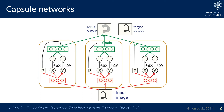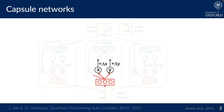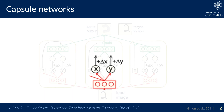One architecture that attempts to learn general equivalence is a capsule network. It is similar to an autoencoder, but the input and output are related by transformation. Crucially, the parameters of the transformation, such as the x and y displacement between input and output image, are added to two of the network's activations.